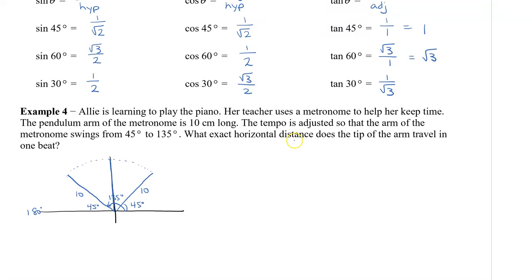What is the exact horizontal distance the tip of the arm travels in one beat? What we're looking for is a distance from here to here. And we want the horizontal distance. So, we want this distance right there. Knowing that this is 45 degrees here and this is a horizontal distance, which is parallel to this axis, then we also know that this has to be 45 degrees. And if you look, these are what we would call alternate interior angles here.